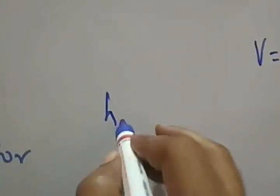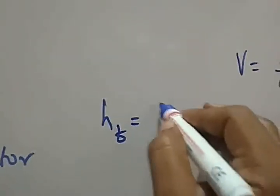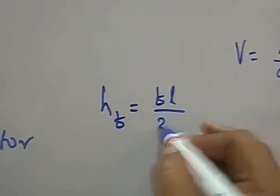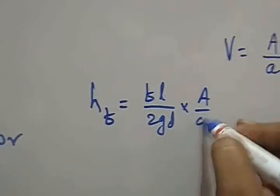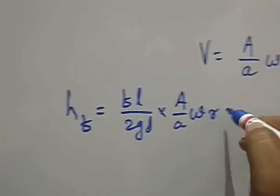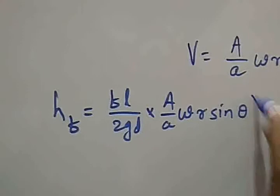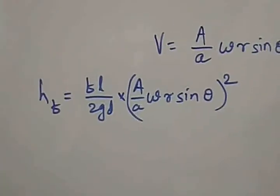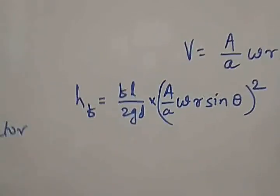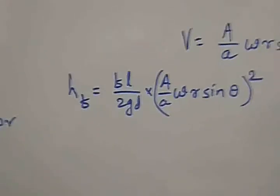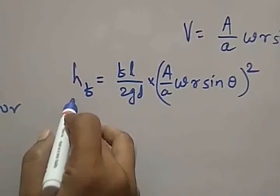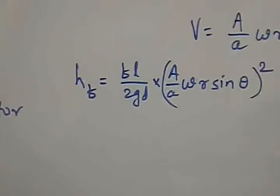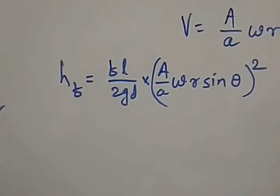So, HF is equal to FL upon 2GD into [(A/a)ωR sinθ]². We can see that HF depends on the angle θ, so we will see what that dependency is.